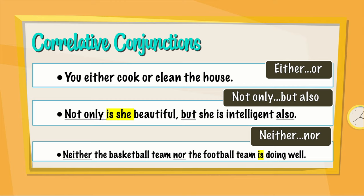The next one: neither nor. Neither the basketball team nor the football team is doing well. Here you may notice that "is" is the verb, highlighted in yellow, and it is the singular form because we're describing either the basketball team or the football team — so "is".